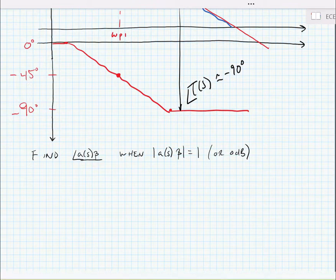So what we are doing when we're finding phase margin is we're finding the angle of T of s or little a of s times beta when the magnitude of T of s or little a of s times beta is equal to 1.